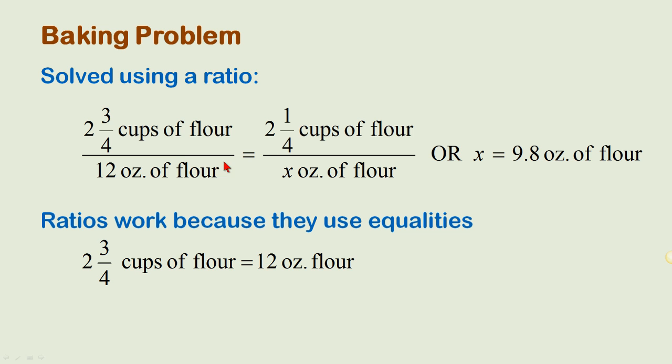You set one equality equal to the second equality. On the top, we have 2¾ cups of flour over 12 ounces. Then we're trying to determine the second equality, which is 2¼ cups of flour over x ounces. We cross multiply and we get x equals 9.8 ounces of flour. The ratios work because they use equalities.